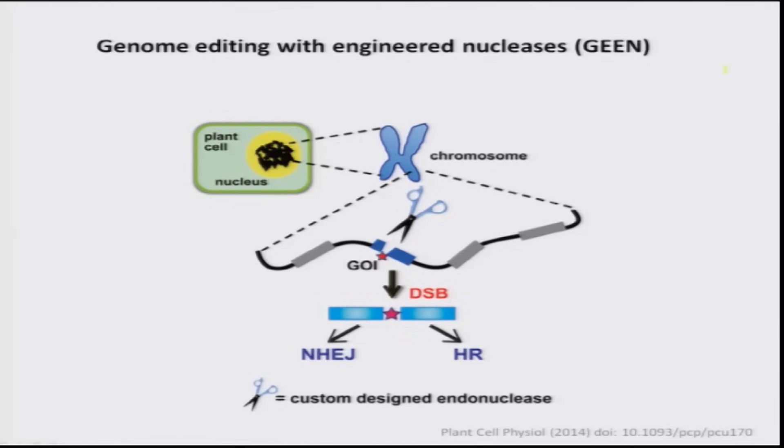Creating a conditional knockout construct is a very tedious process. It requires manipulating the genome, creating a construct, and is time-consuming. It works well for organisms whose genomes are sequenced and whose gene structures are known, but it is not universally applicable and has its own limitations.